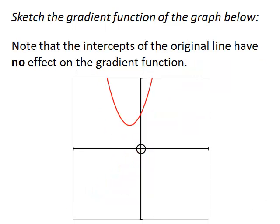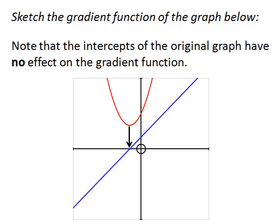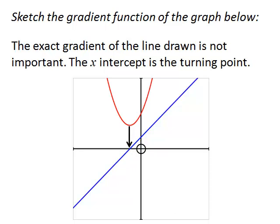Now, you have to note that the intercepts of the original line have no effect at all on the gradient function. Raising the parabola up doesn't change the gradient function. We still have a positive line with its turning point of the original function being the x-intercept. The exact gradient is not important. As long as the x-intercept is the turning point, we can change the gradient on our scaleless diagram.